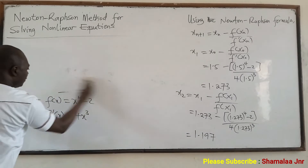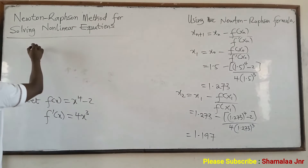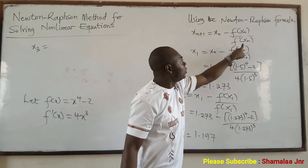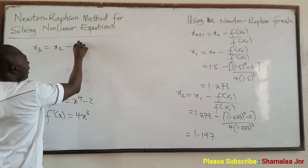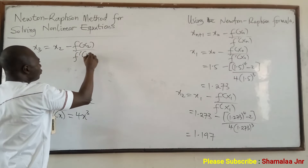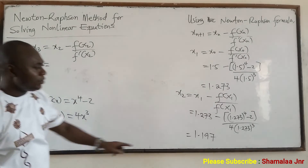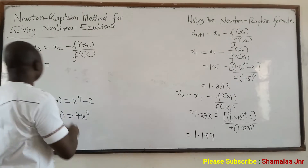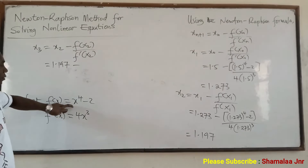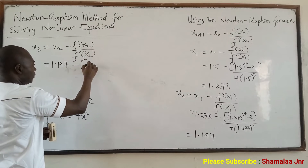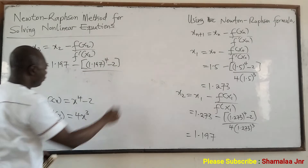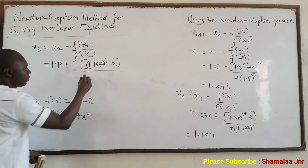Now this is the function. We are going to have X3. X3 means that N is equal to 2, so we are going to have X3 = X2 minus F of X2 all over F prime of X2. X2 is 1.197. Minus — putting 1.197 in this function — so we have 1.197 raised to the power 4 minus 2, all over 4 times 1.197 raised to the power 3.